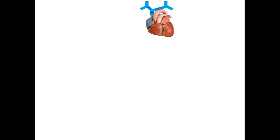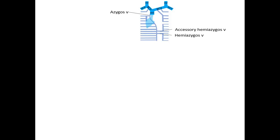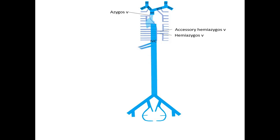First let's examine some systemic veins. Here is the heart with its right atrium receiving the superior vena cava, which is formed by the right and left brachiocephalic veins. These in turn are formed by the subclavian and internal jugular veins. Here we have the azygous vein draining blood from the right thoracic wall and receiving the accessory hemi-azygous and hemi-azygous veins which drain the left side. Now we add the inferior vena cava, also draining to the right atrium, formed by the junction of the right and left common iliac veins, which in turn are formed by the junction of the internal and external iliac veins.